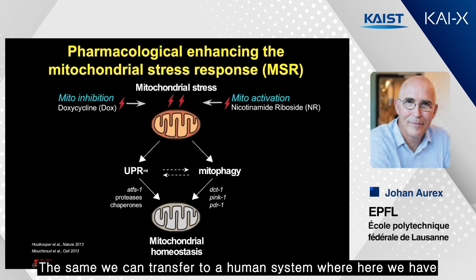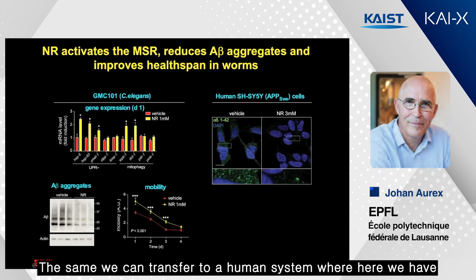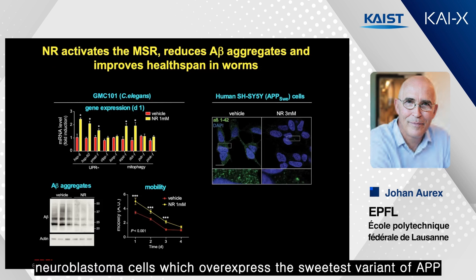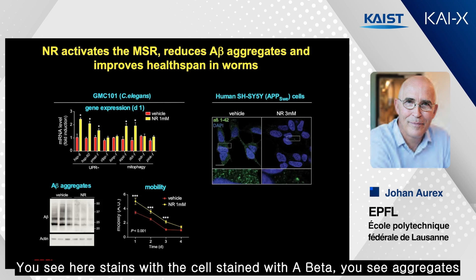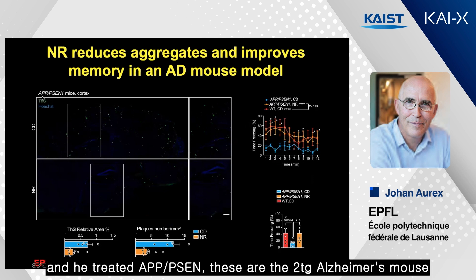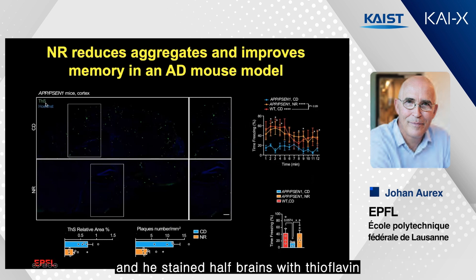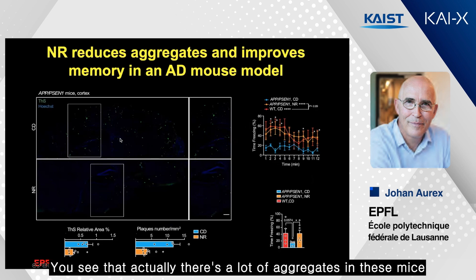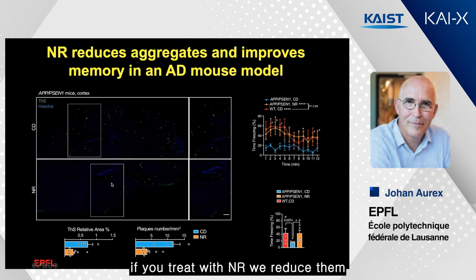The same we can transfer to a human system, using SH-SY5Y neuroblastoma cells overexpressing the Swedish variant of APP. You see cells stained with A-beta showing aggregates, which are reduced with NR treatment. We also took it into a mouse study, treating APP-PSEN (the 2TG Alzheimer mouse) and staining half-brains with thioflavin S, which stains aggregates. You can see massive aggregates in these mice, which are reduced upon NR treatment.